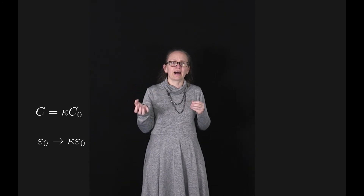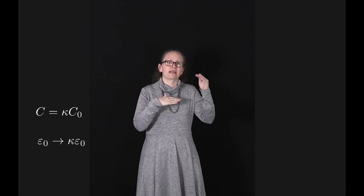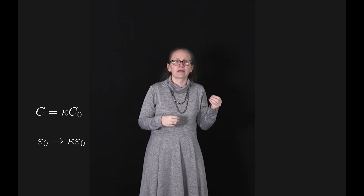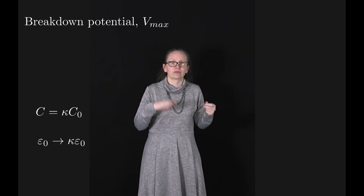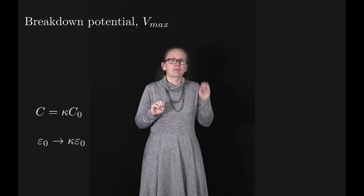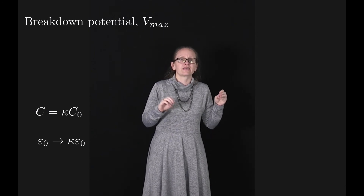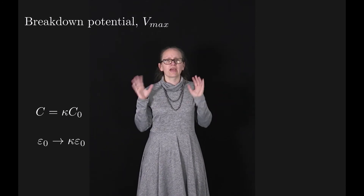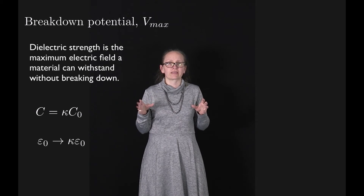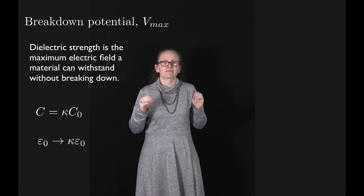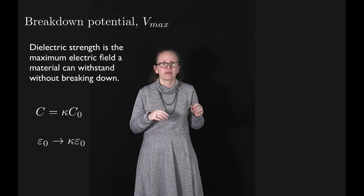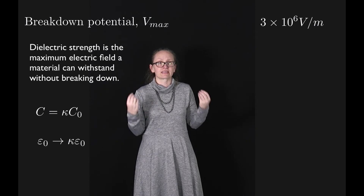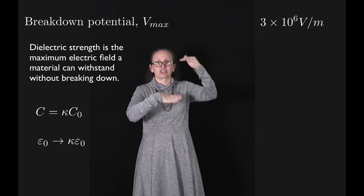Materials with a high dielectric constant have a lower potential difference for the same amount of charge stored on them. This is desirable as each material has a breakdown potential, V_max. If the breakdown potential is exceeded, the dielectric will break down and form a conducting path between the plates. Every dielectric material has a dielectric strength — the maximum electric field it can withstand without breaking down. For air, this is around 3×10⁶ volts per meter; once exceeded, sparks will jump between the plates discharging them.